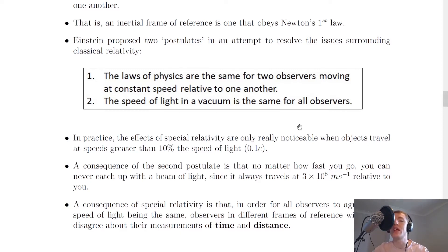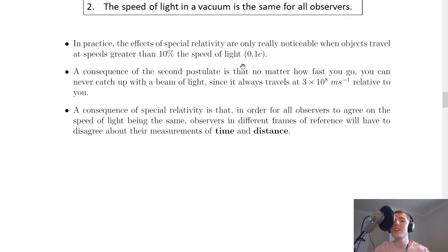So these two postulates are very important and they're things that you could be asked to state. It then says that in practice the effects of special relativity are only really noticeable when objects travel at speeds greater than 10% the speed of light, which is 0.1c. So remember we called those speeds relativistic velocities.